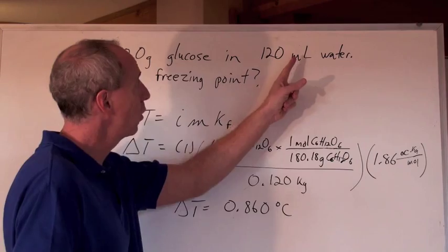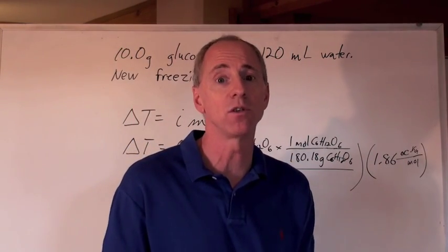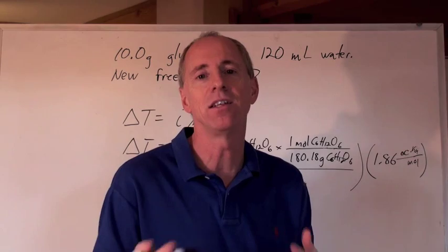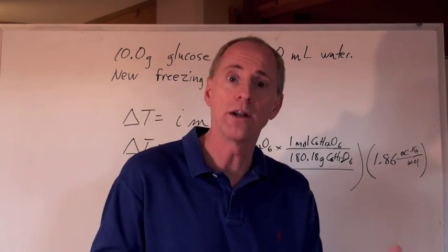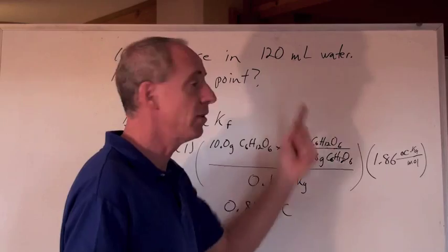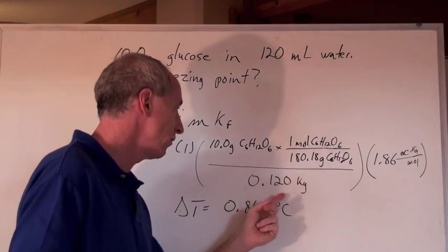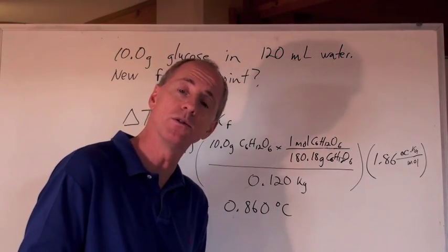I have 120 milliliters of water, and at 25 degrees Celsius or so, the density of water is 1 gram per milliliter. So, therefore, if you've got 120 milliliters, we've got 120 grams, divide by 1000, and you've got 0.120 kilograms.